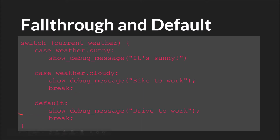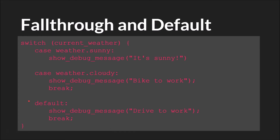And then of course we have the default case. Like I said, this works just like the else in an if/else statement — you can see the conditional statement tutorial for more. It will run if there are no matches, so if current_weather does not equal weather.sunny or weather.cloudy, you'll get this debug message.